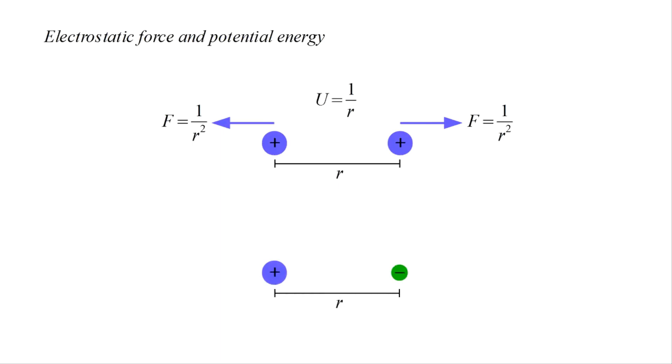For a proton and electron separated by the same distance, the force has the same magnitude, but is attractive instead of repulsive. In this case, we would have to expend work 1 over r to pull the charges away from each other and out to infinity. We say the configuration has a negative potential energy of minus 1 over r.